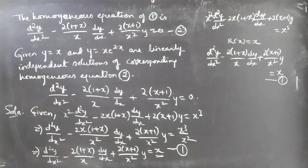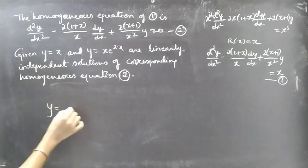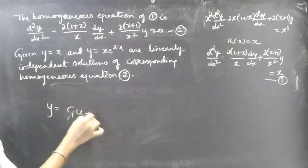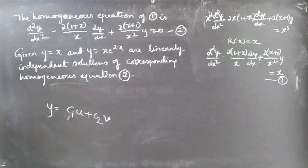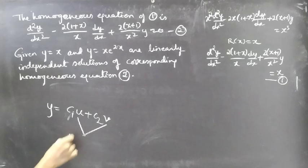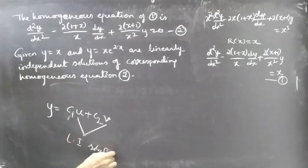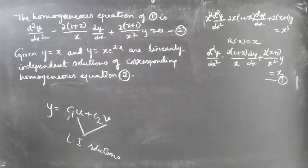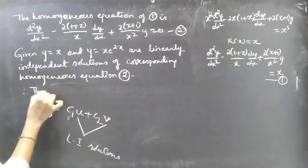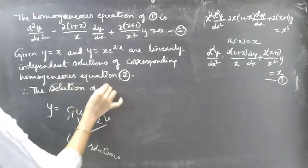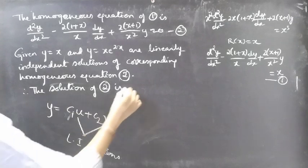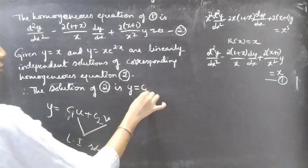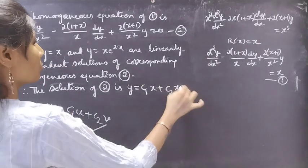When y = c₁u + c₂v is the general solution of the homogeneous equation, u and v are called linearly independent solutions. We already have those linearly independent solutions, so we can write the general solution. Therefore the solution of equation 2 is y = c₁x + c₂xe^(2x).